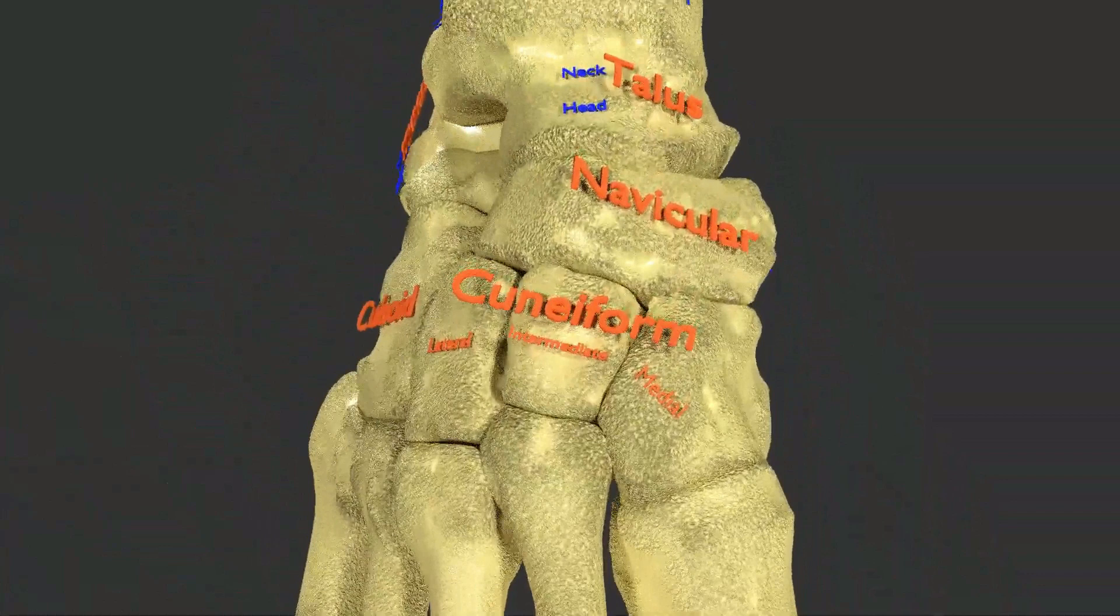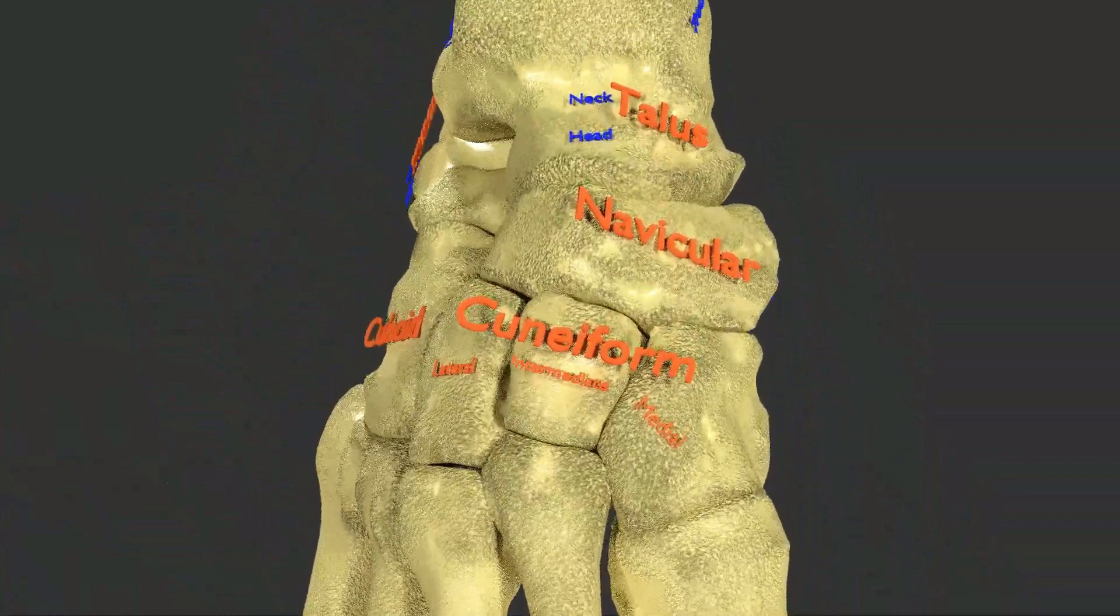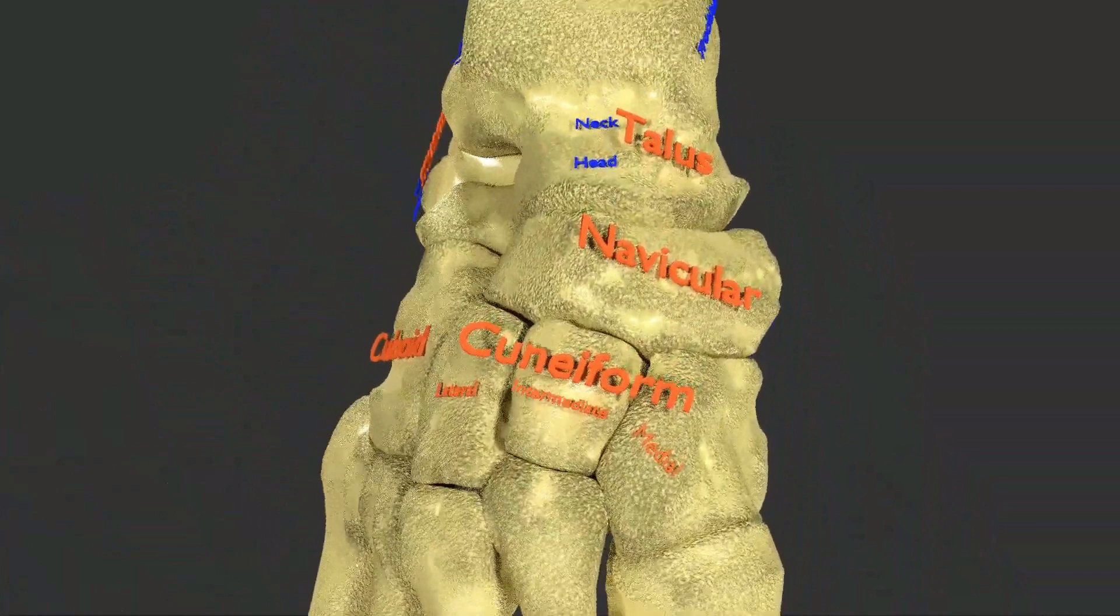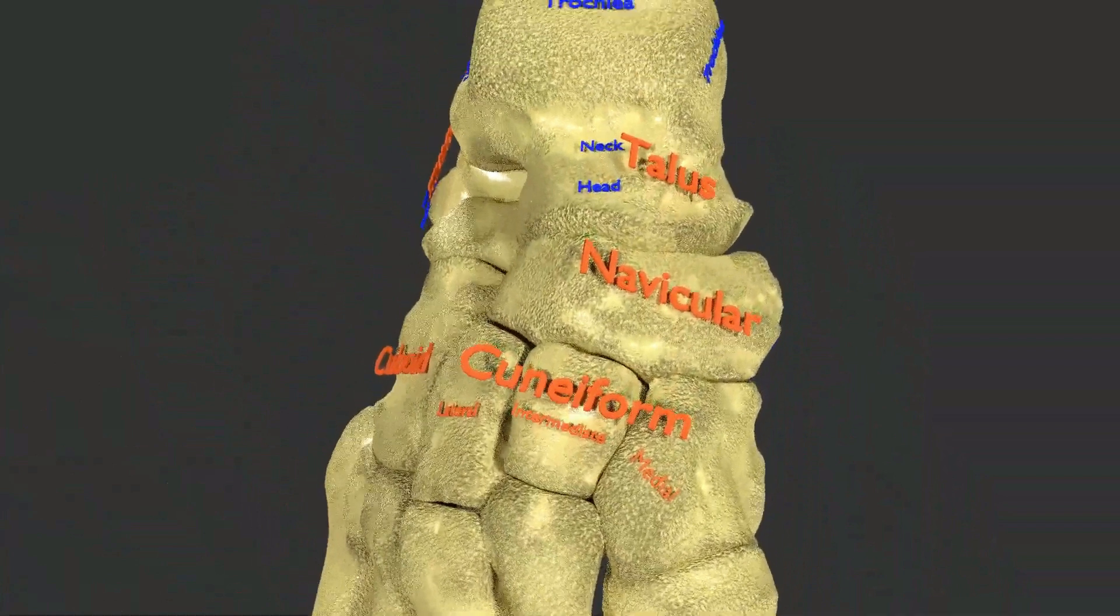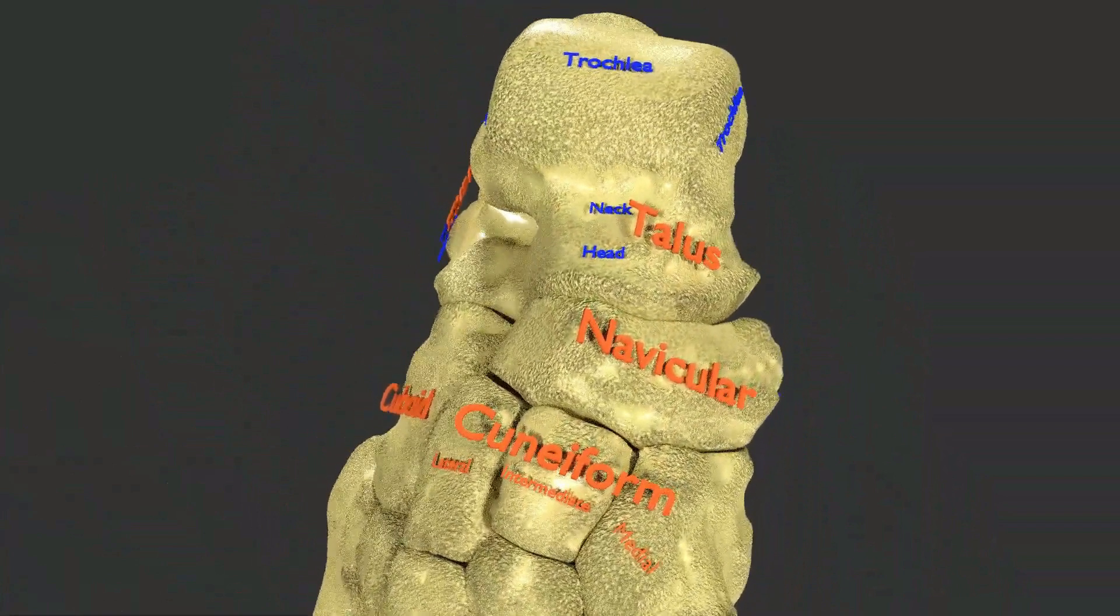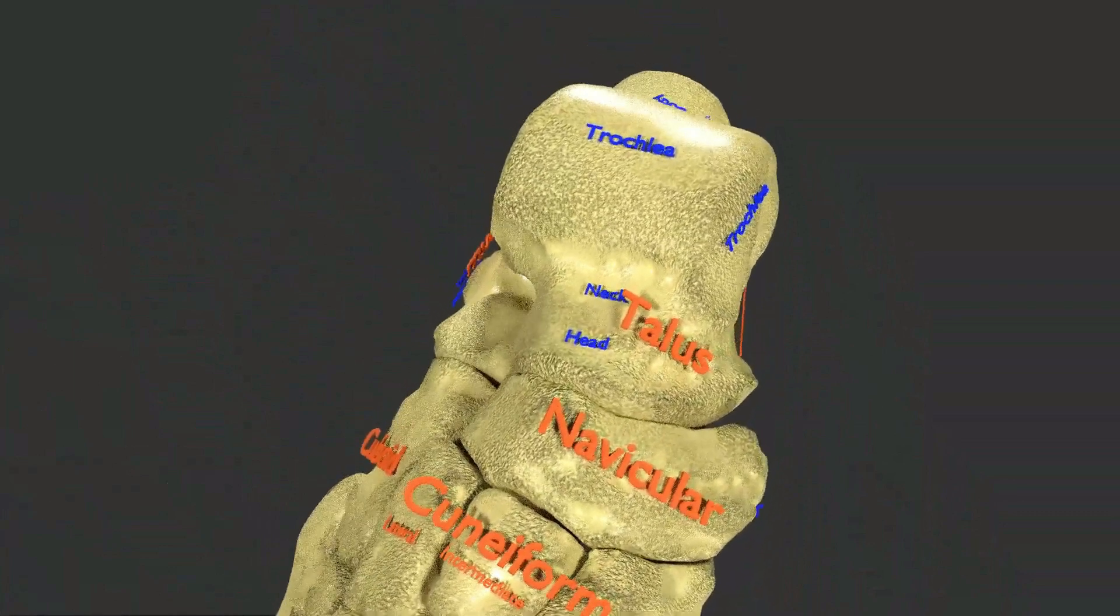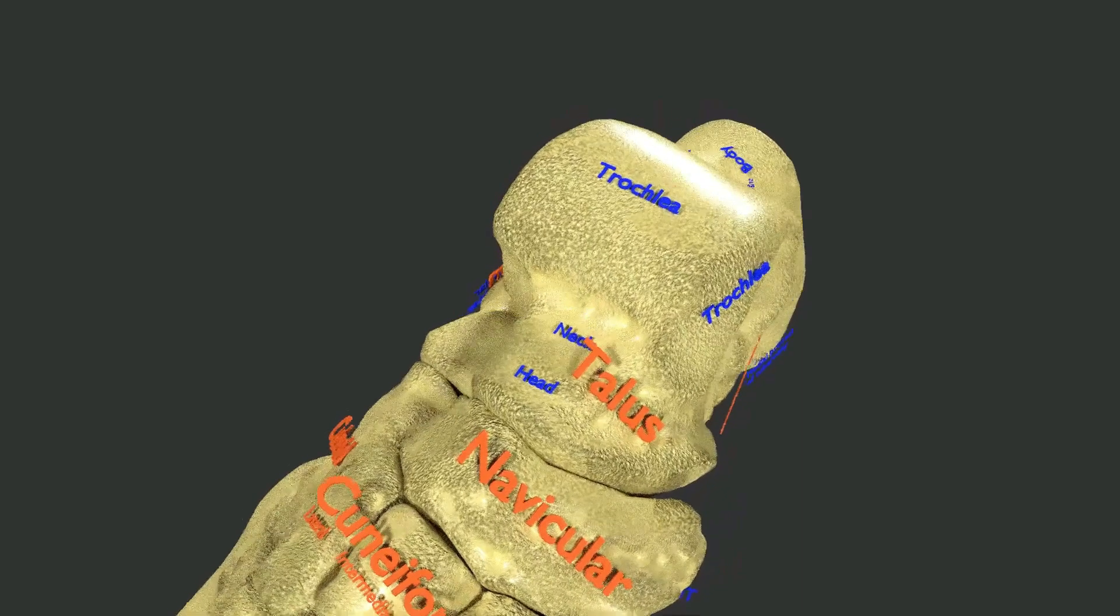Coming to the tarsal bones, there are seven in number. First you see the three cuneiform bones: medial cuneiform, intermediate cuneiform, and lateral cuneiform. Posterior to the cuneiform is the navicular and talus. The talus bone connects the right foot to leg bones tibia and fibula.